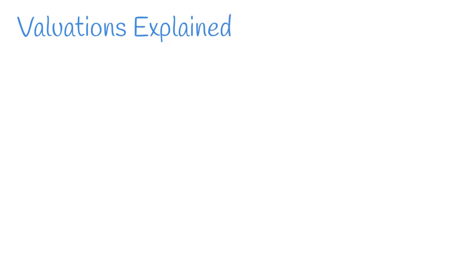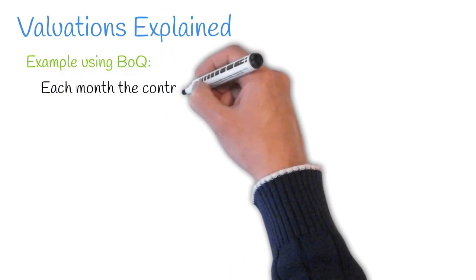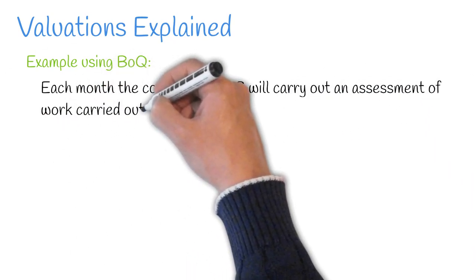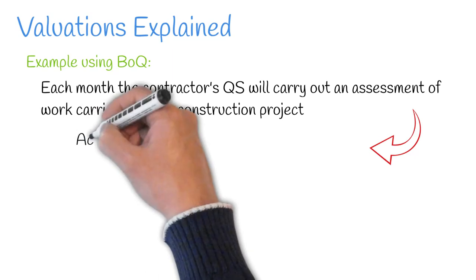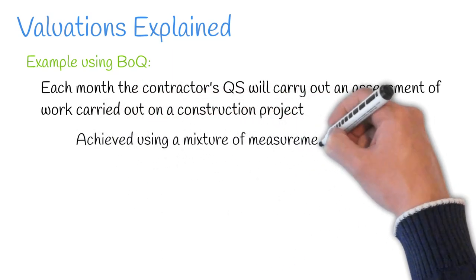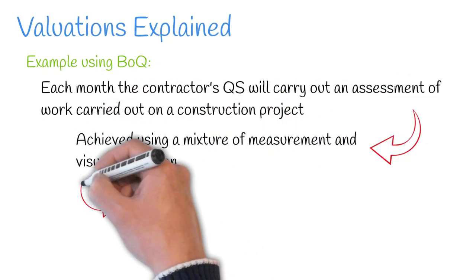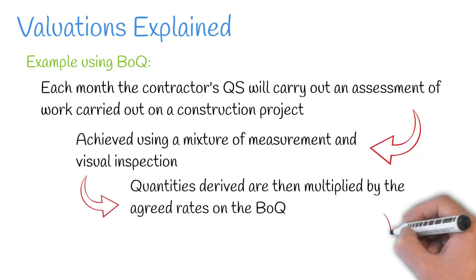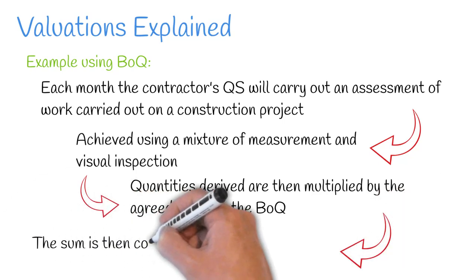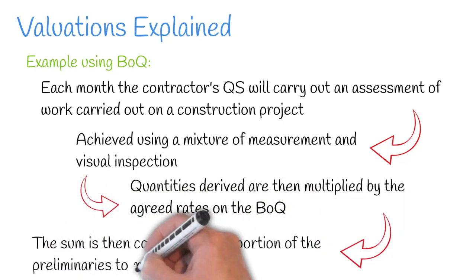We'll delve a little deeper into valuations. In this example, we're going to assume the payment method is based on assessment using a bill of quantities. Usually carried out on a monthly basis, the contractor's quantity surveyor will carry out a realistic assessment of what work has been carried out on site to form part of the valuation. This is achieved using a mixture of measurement and visual inspection. The quantities derived from this assessment are then multiplied by the agreed rates on the bill of quantities. The sum is then combined with a portion of the preliminaries to make up the external valuation.